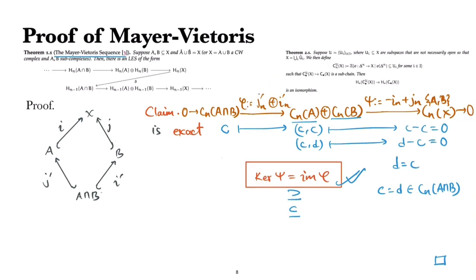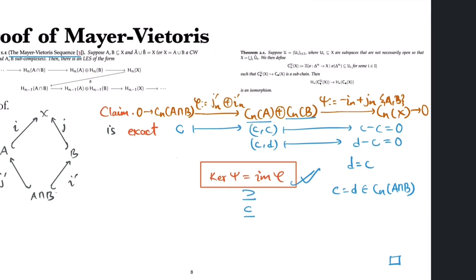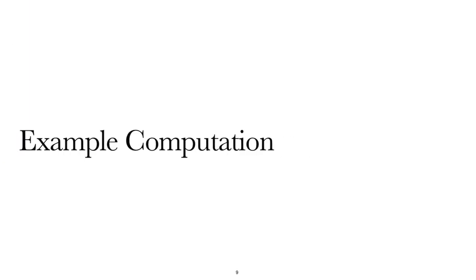We want to remark here that the Mayer-Vietoris sequence actually holds in the case of reduced homology as well, which we'll be using later. Since we're done with the proof, we can move on to the actual uses in computations. This is much more fun and we're going to use it to compute the homology of a suspension.